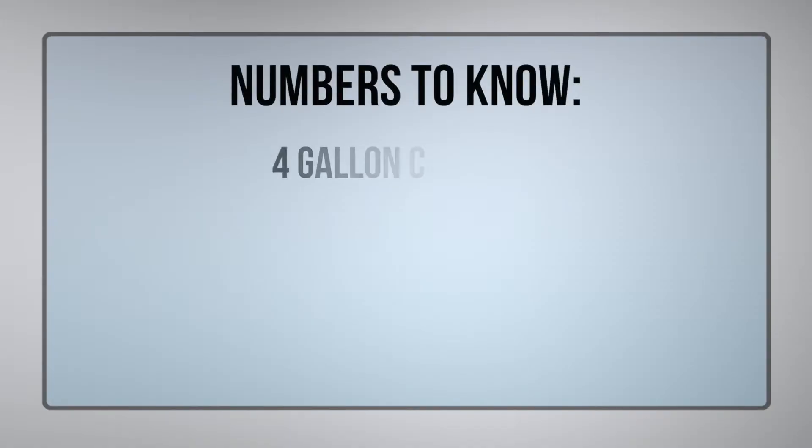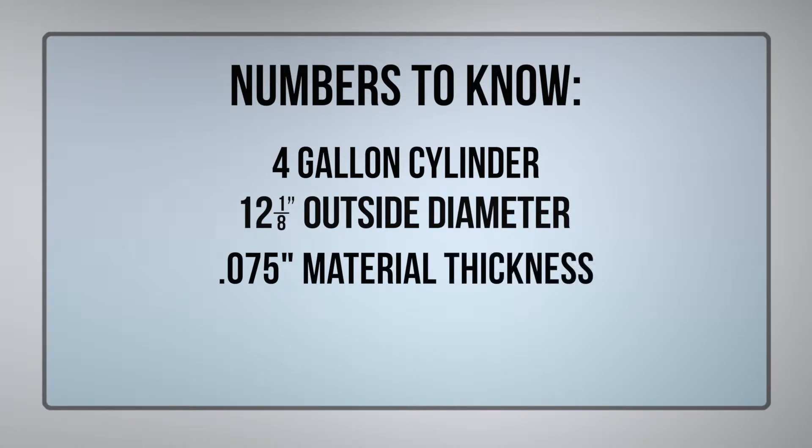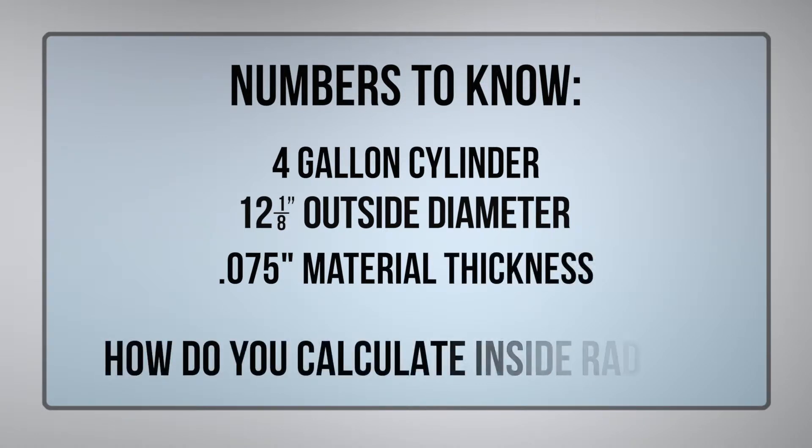Hi Jesse, we have a cylinder that we have to figure out the circumference for the flat layout. I was given that it was a 4 gallon cylinder with a 12 1/8 outside diameter. The material thickness of the wrap is 0.075. Now we have to figure out the inside radius.